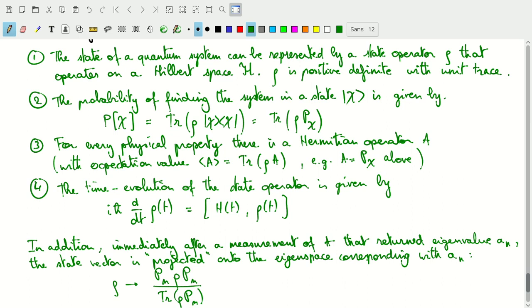Then finally, the fourth postulate is that the time evolution of a state operator is given through the commutator of the Hamiltonian with the state operator.